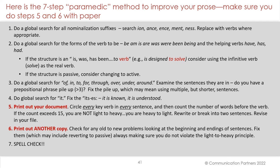Four: do a global search for 'it' — fix the 'it-is' constructions like 'it is known' and 'it is understood,' which are candidates for cutting. Five: print out your document, circle every key verb in every sentence, and count the words before the verb. If the count exceeds 15, you are heavy-to-light, not light-to-heavy — rewrite or break into two sentences, then revise in your file. Six: print out another copy and check for any old-to-new problems, looking at the beginnings and endings of sentences. Fix them — this may include reverting to passive, and that's fine. Always ensure you don't violate the light-to-heavy principle. Seven: spell check.